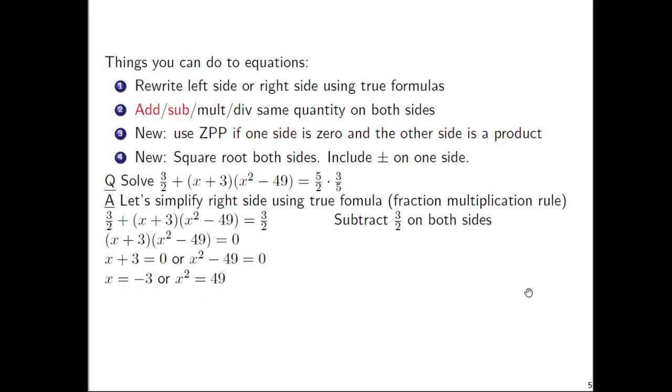Now we have these two smaller equations. The first equation, we can subtract 3 on both sides. I get x = -3. For the second equation, we have x² - 49 = 0. There's actually two ways to do that, but to try to illustrate the fourth thing you can do, to prep for that, let's add 49 to both sides. So you get x² = 49. And now to that last equation here, if you square root both sides of x² = 49, you have x = ±7. So in this one problem, we've demonstrated all four types of things you can do to equations.